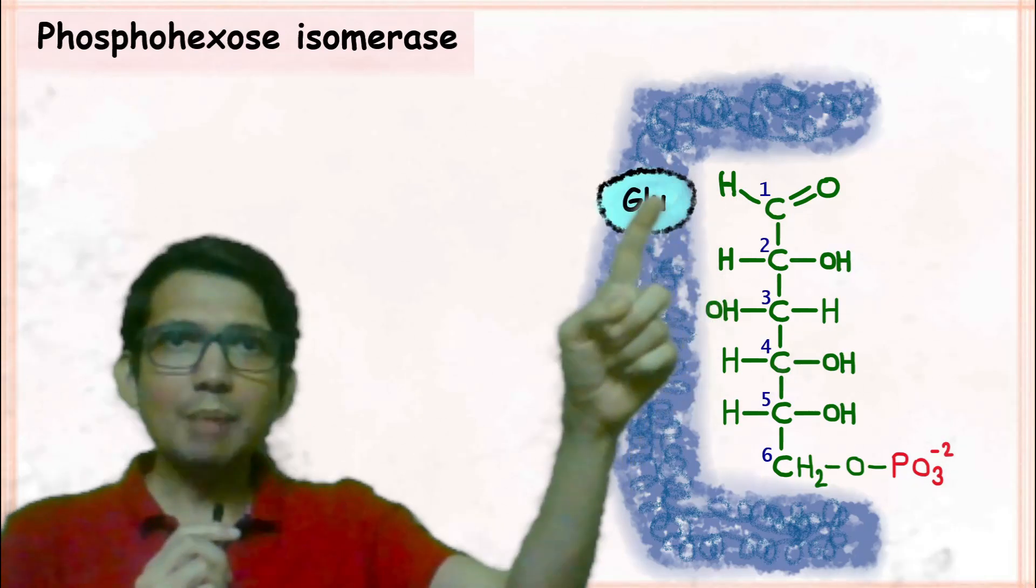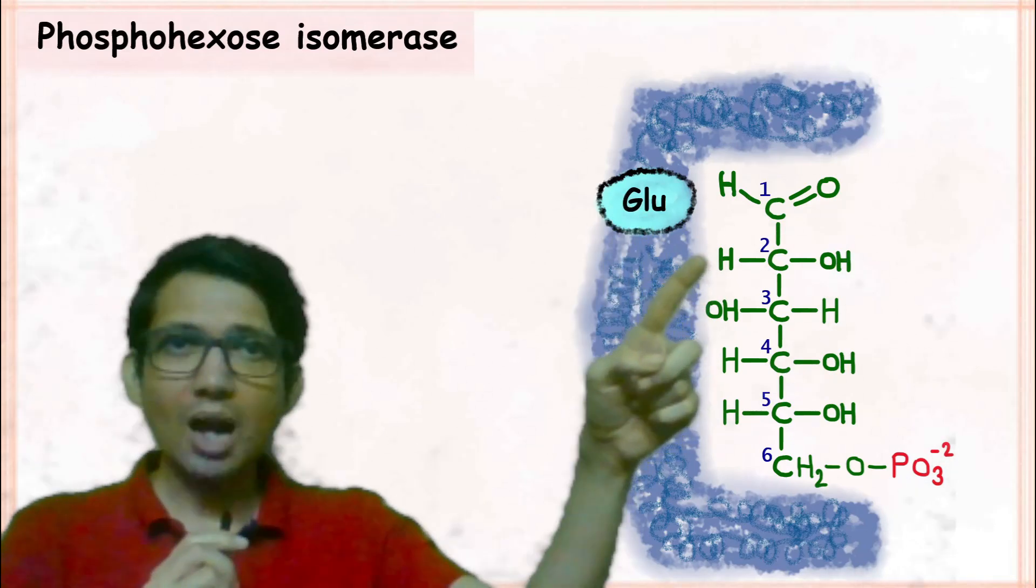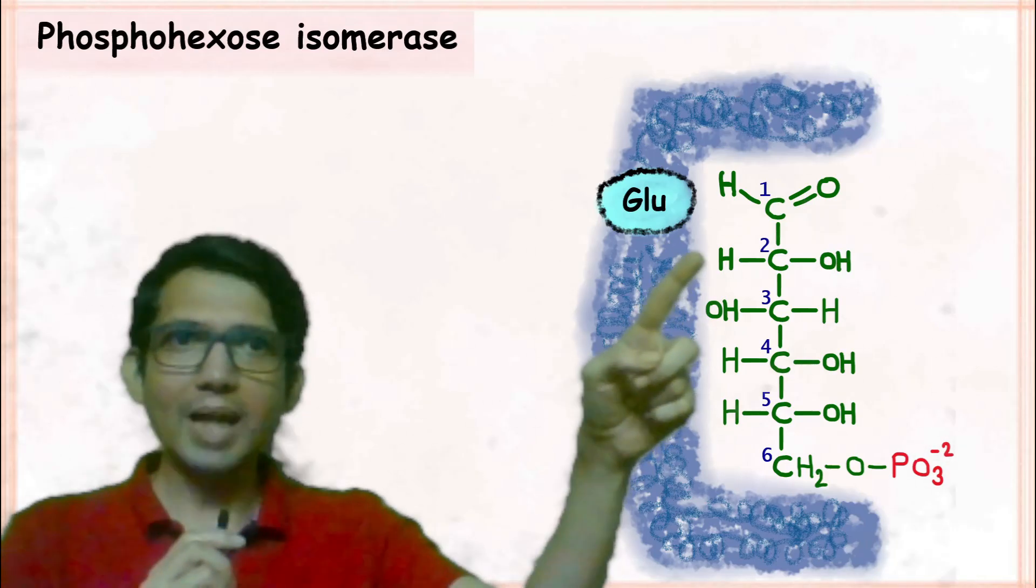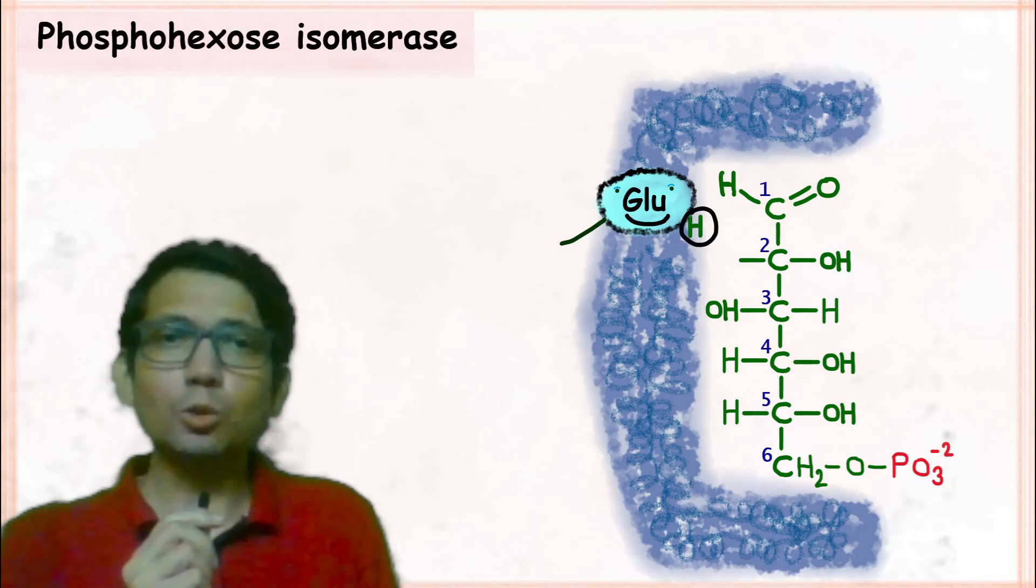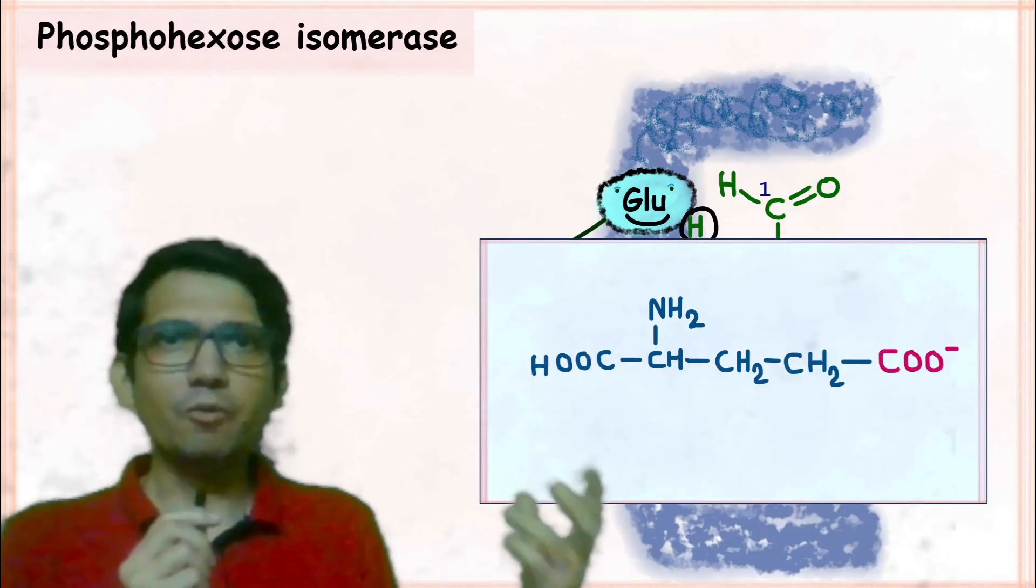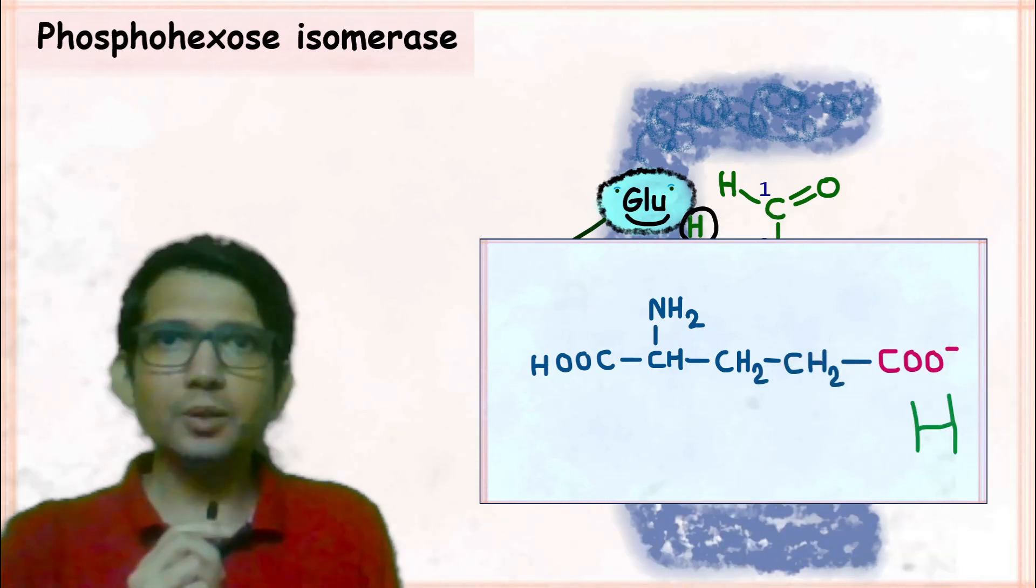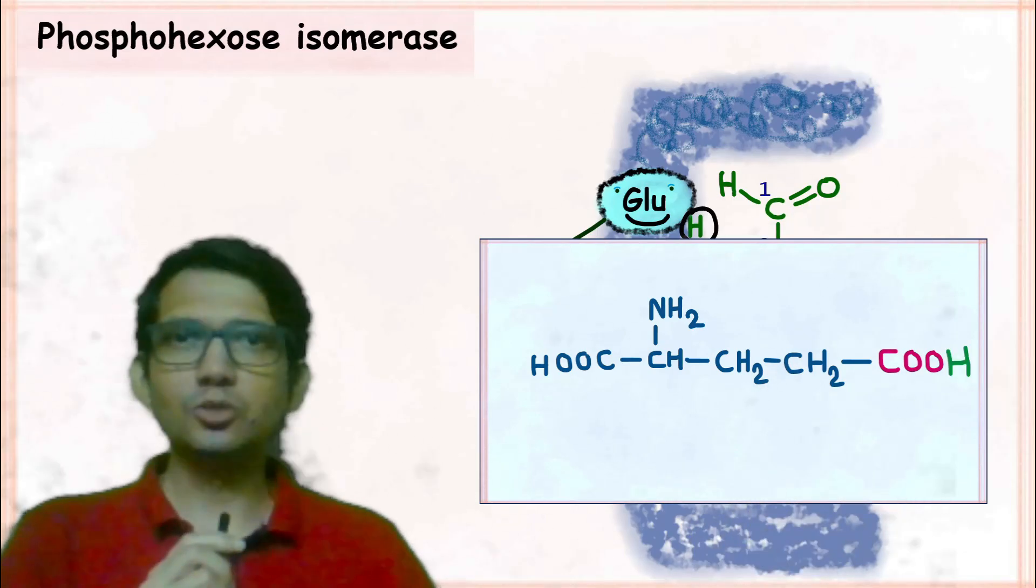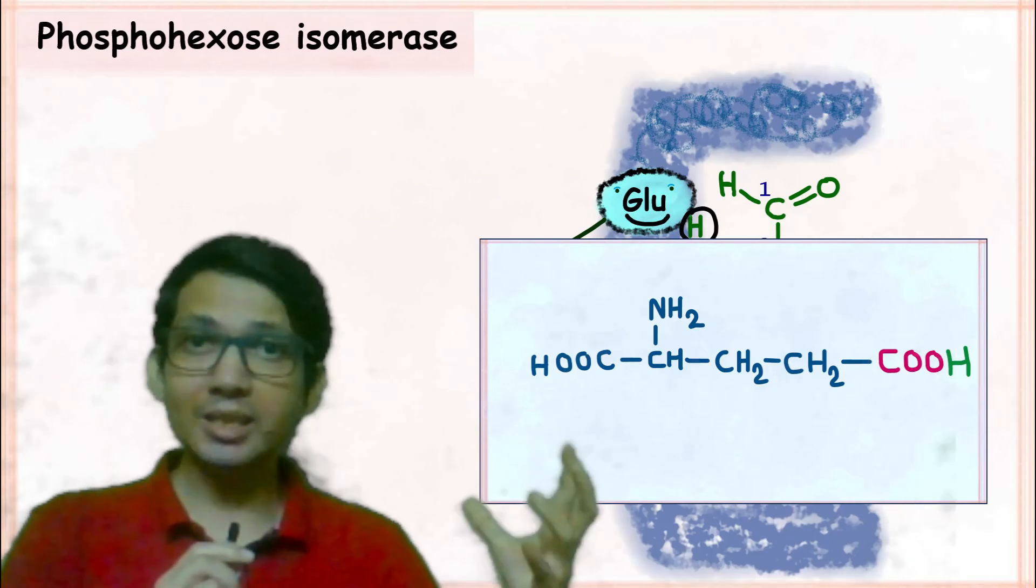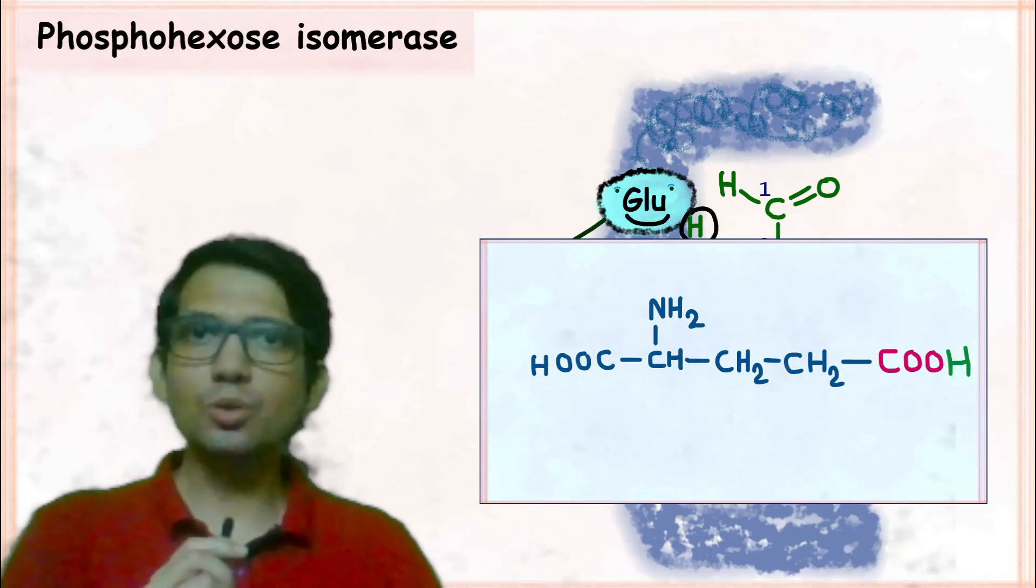In the next step, the glutamic acid residue which is present at the active site of the enzyme takes away the hydrogen from C2 carbon atom. What glutamic acid does is, we all know glutamic acid has a COO- group, so it is this group which accepts the hydrogen and forms COOH. This is how the glutamic acid which is present at the active site of the enzyme takes away the hydrogen from C2 carbon atom.